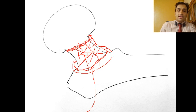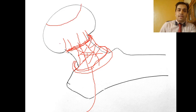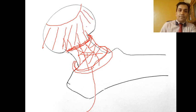This arterial ring provides branches into the head of the femur supplying about 75% of the femoral head. These ascending branches are called the intracervical ascending branches of Troeta.